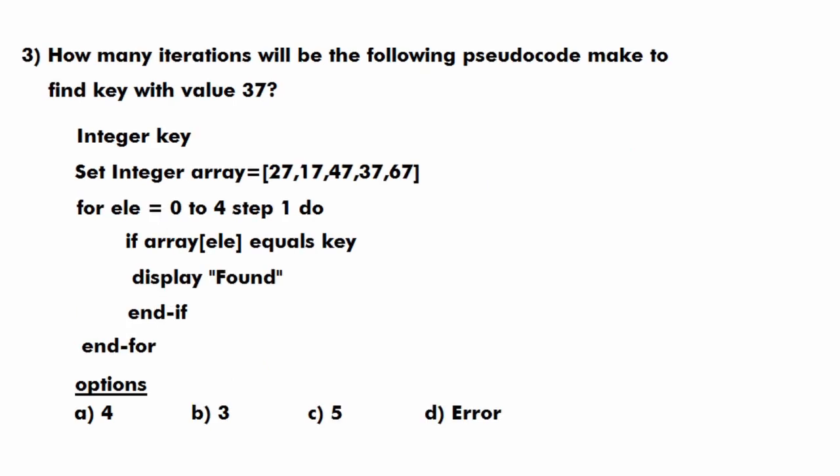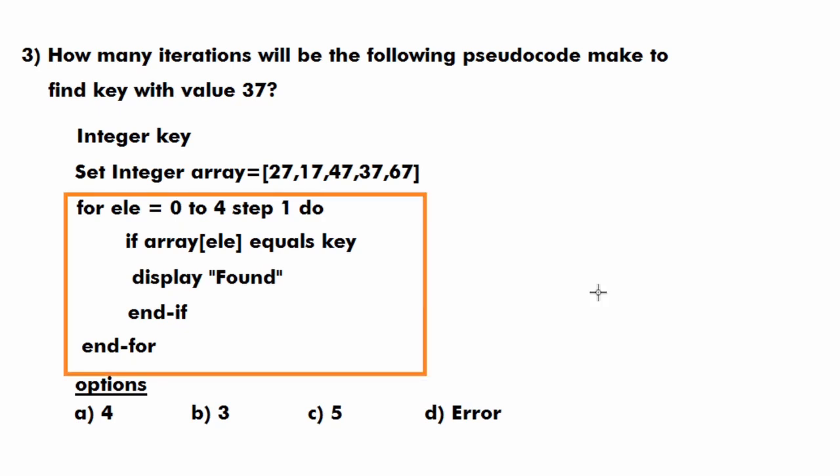Moving to the third question: how many iterations will the following pseudocode make to find the key with value 37? The pseudocode contains an array and a for loop. The loop uses a variable ele starting from 0 and iterates from index 0 to 4, covering all indexes of the array. Inside the loop, if array[ele] equals key, it displays 'found'.